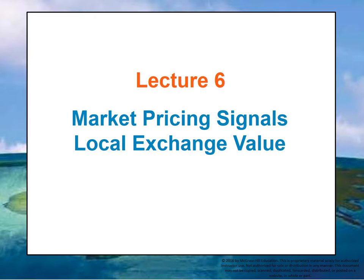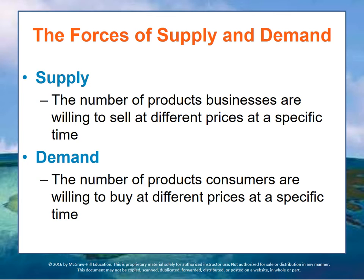In this lecture, we'll talk about market pricing and how it signals local value. Because people and organizations want and need access to a limited supply of the products and services that other people and organizations either have on hand or have to make, all of these groups and individuals compete for access to a very limited number of resources.